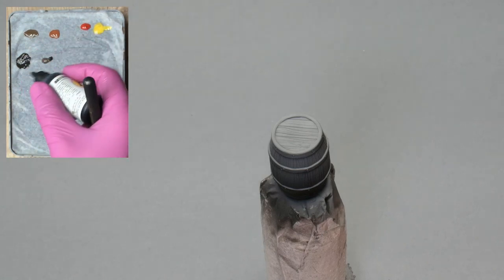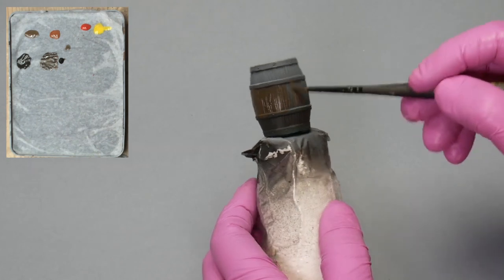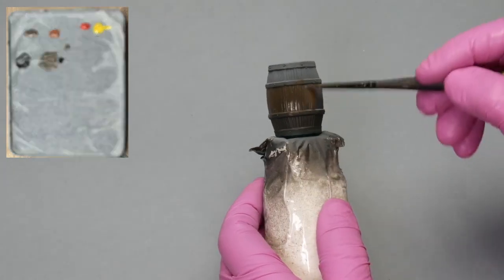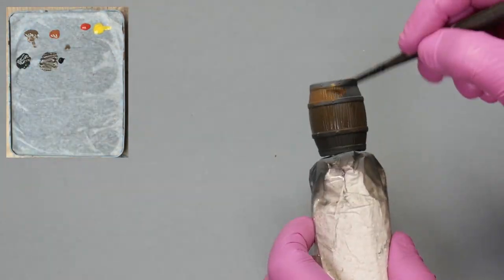I'm doing a half tone and I'm going to apply it to the middle part of the barrel. Now the pure deep brown on the top.